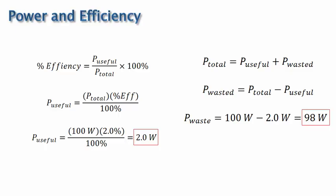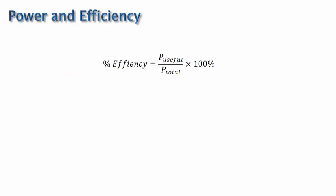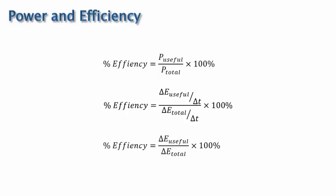The last thing I'd like to mention is that the equations related to efficiency can also be written in terms of energy. For instance, starting with the efficiency equation, each term can be replaced with energy divided by time, and then the delta t's cancel, so we wind up with the original efficiency equation, but in terms of energy instead of power.